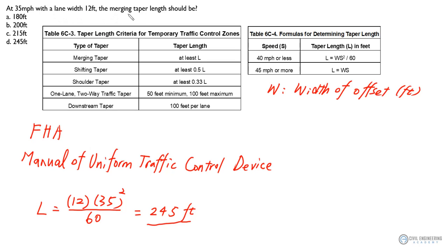So for this question, we're using a taper length for a merging taper, and the speed is 35 miles per hour. So we're falling into this range, so we should use this formula to calculate L. And because this is a merging taper, the offset will be the width of the lane. So we're going to use the whole lane width as the offset W. So W equals 12, and L equals 12 times 35 squared divided by 60.